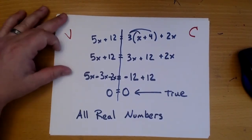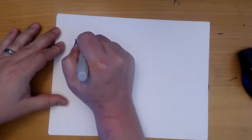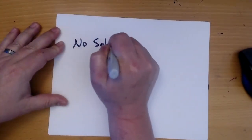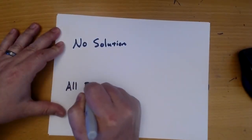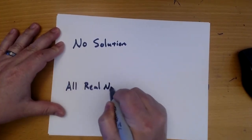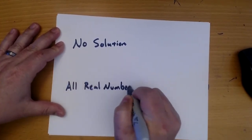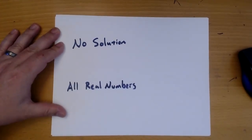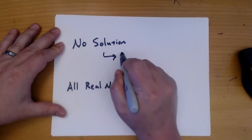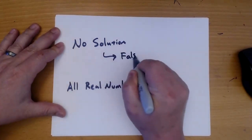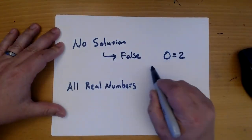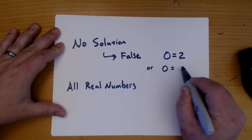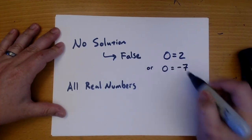So we have two special cases: no solution and all real numbers. No solution happens when you have something that's false, or 0 equals negative 7. These are not true.